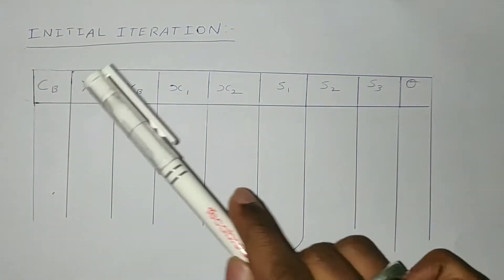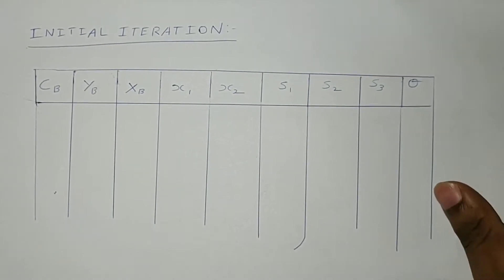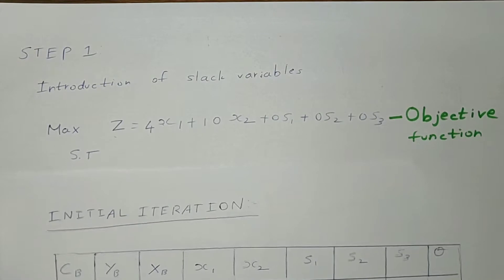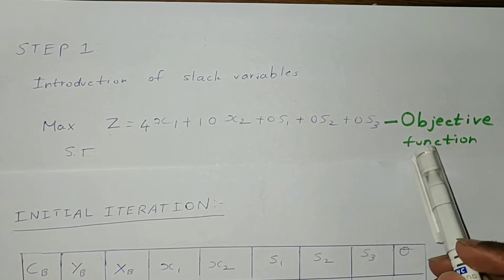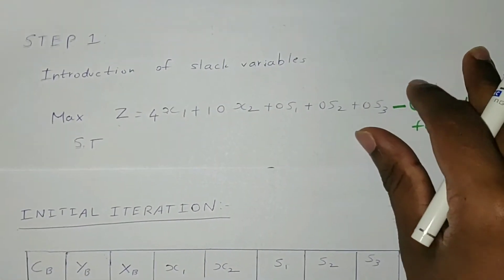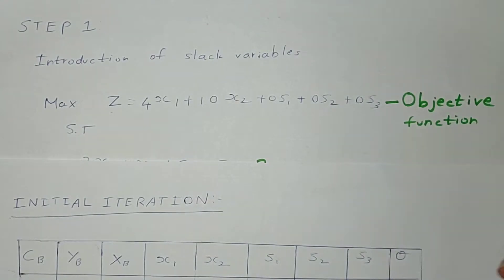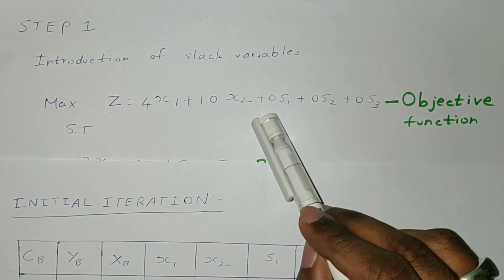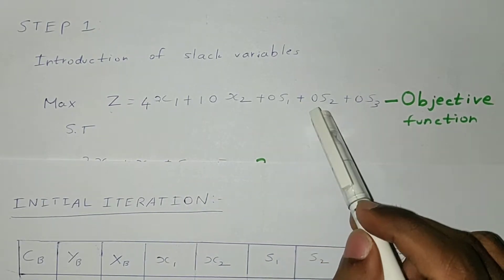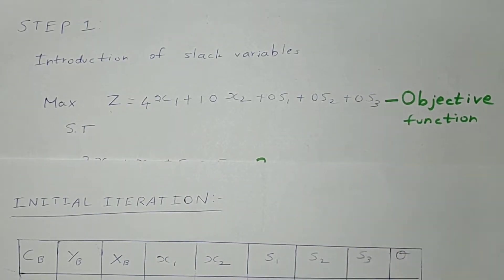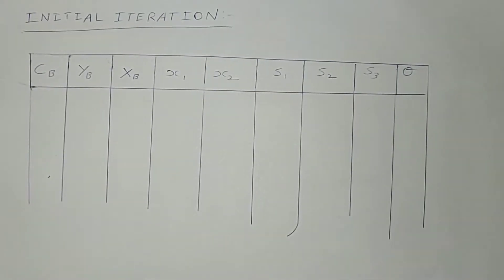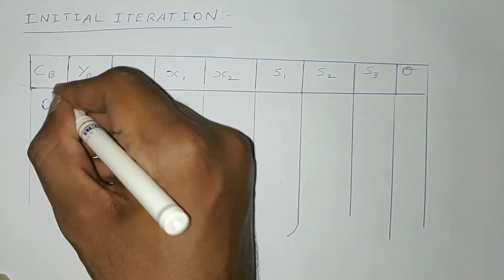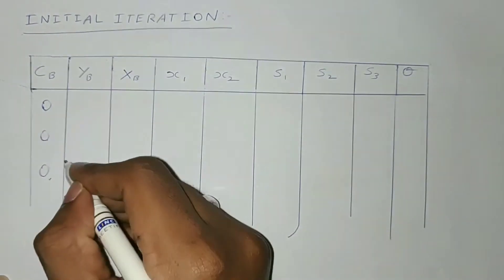What is cb? cb is the coefficient of the slack variables in the objective function. We put the coefficient of slack variables in the objective function. The coefficient of slack variable s1 is 0, s2 is 0, and s3 is also 0. So in the first column, we write 0, 0, and 0.